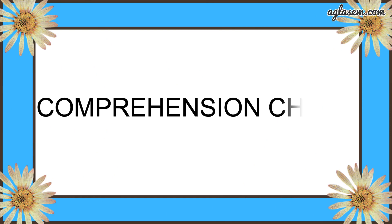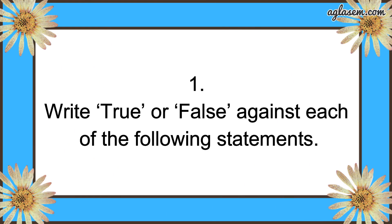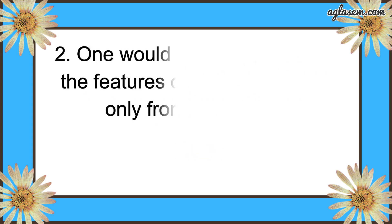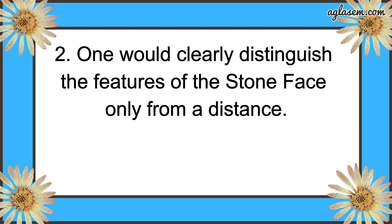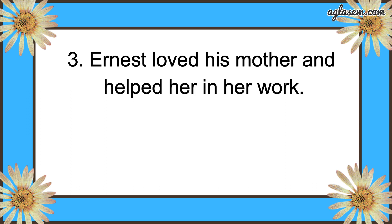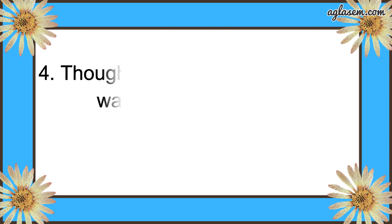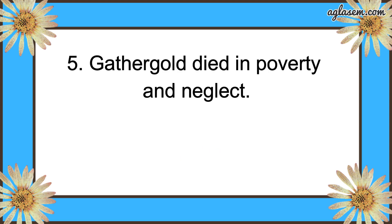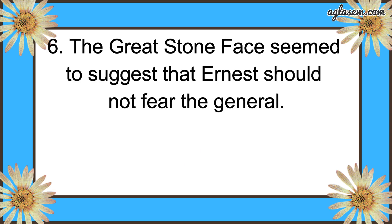Let's begin with the comprehension check — write true or false against each statement. First: the great stone face stood near where Ernest and his mother lived — False. Second: one could clearly distinguish the features of the stone face only from a distance — True. Third: Ernest loved his mother and helped her in her work — True. Fourth: though not very rich, Gather Gold was a skillful merchant — False. Fifth: Gather Gold died in poverty and neglect — True. Sixth: the great stone face seemed to suggest that Ernest should not fear the general — True.